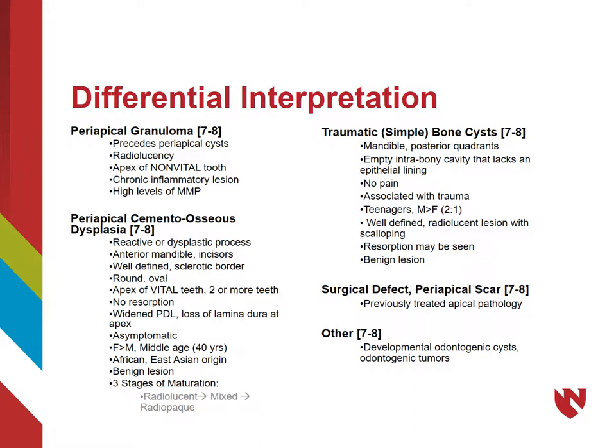Traumatic bone cysts, also known as simple bone cysts, usually occur in the posterior mandible. This is technically a pseudocyst rather than a true cyst due to the fact that it lacks an epithelial lining. It is also an empty cavity versus a fluid-filled cyst. Although these pseudocysts can also be asymptomatic, they are usually associated with trauma and occur most often in teenagers, either male or female. Radiographically, they appear as well-defined radiolucencies that can exhibit scalloping at the borders. These benign lesions can also cause bone resorption. Surgical defects or periapical scars should also be considered, but only if there is a history of previously treated apical pathology.